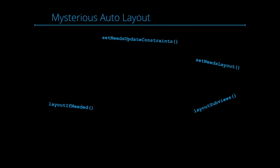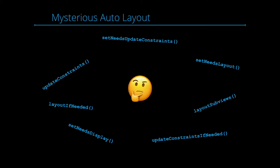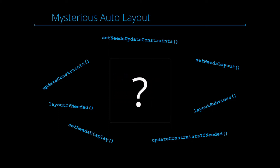Auto Layout is a pretty mysterious thing to many developers, and there's a very good reason why Apple has two WWDC talks called 'Mysteries of Auto Layout.' There are so many methods related to Auto Layout that all sound very similar: there's layoutSubviews, layoutIfNeeded, setNeedsLayout, setNeedsUpdateConstraints, setNeedsDisplay, updateConstraints, and updateConstraintsIfNeeded. You never really know which of these methods to call to achieve what you want, and you end up trying every single one. Auto Layout is pretty much a huge black box for many developers.